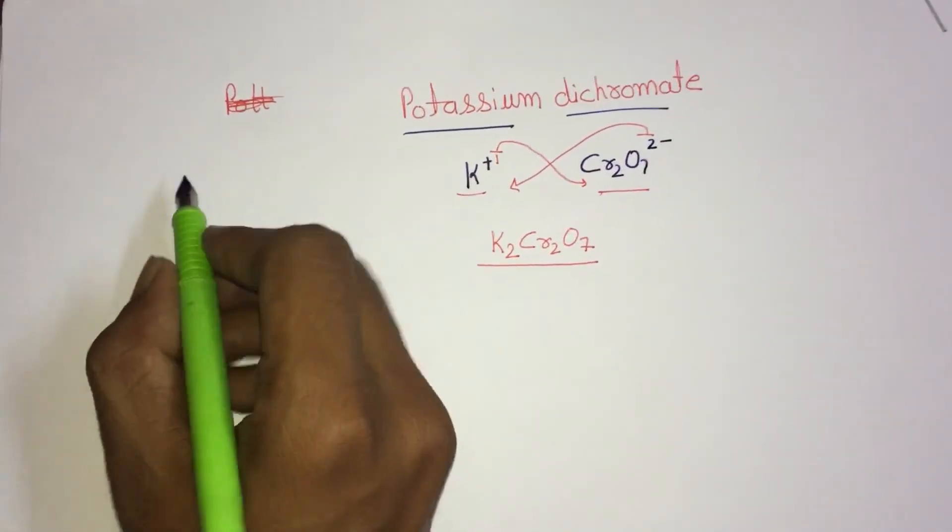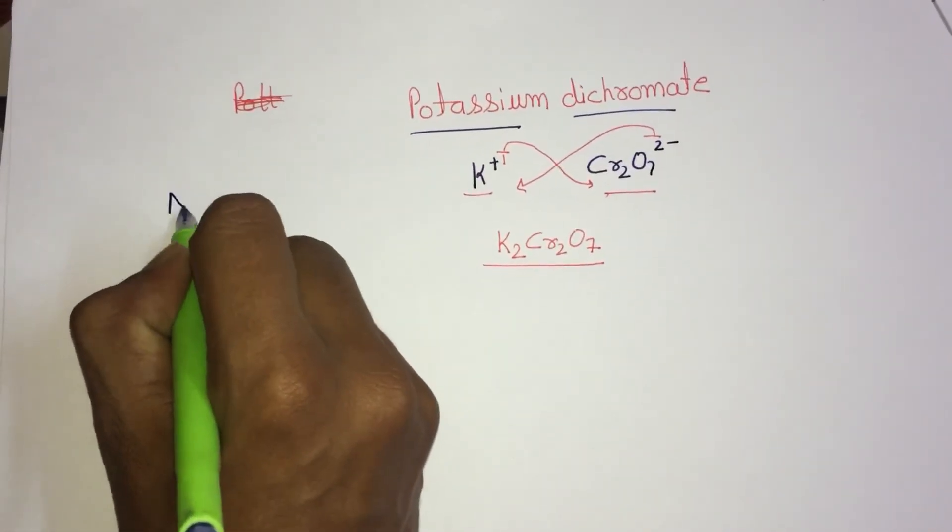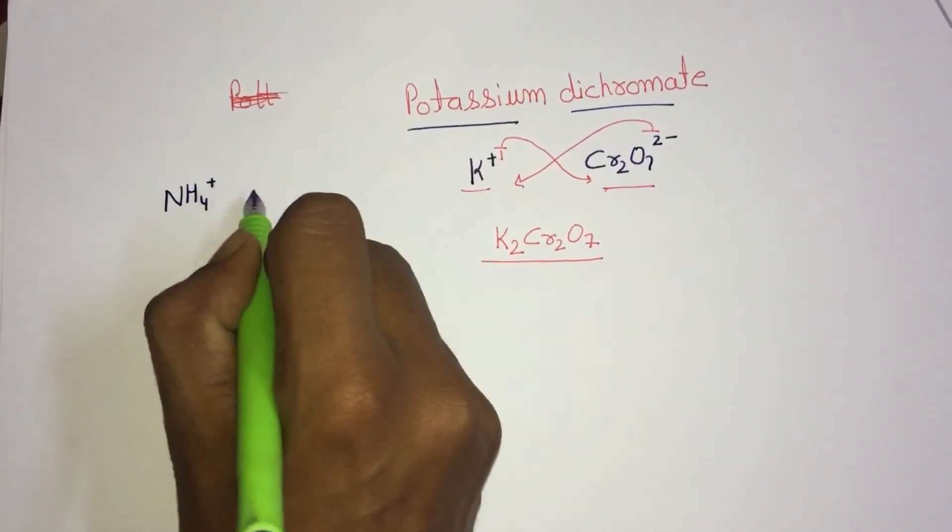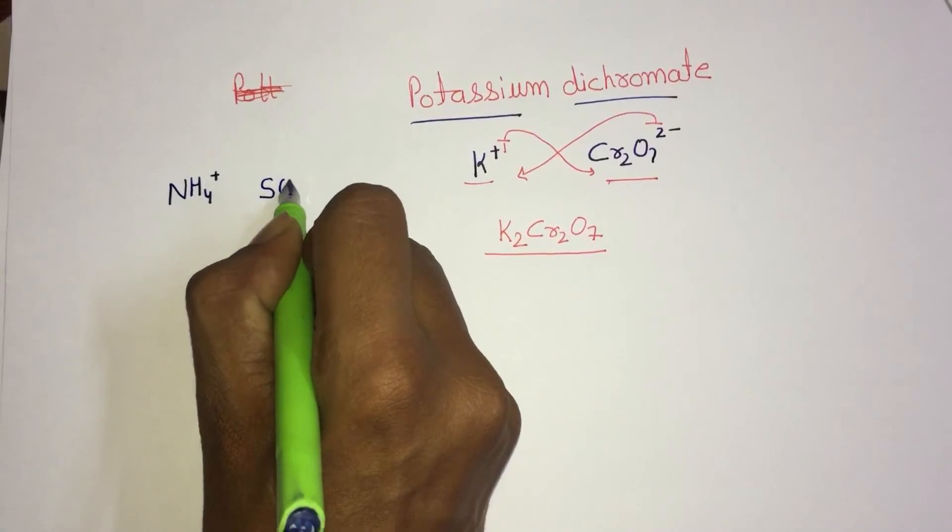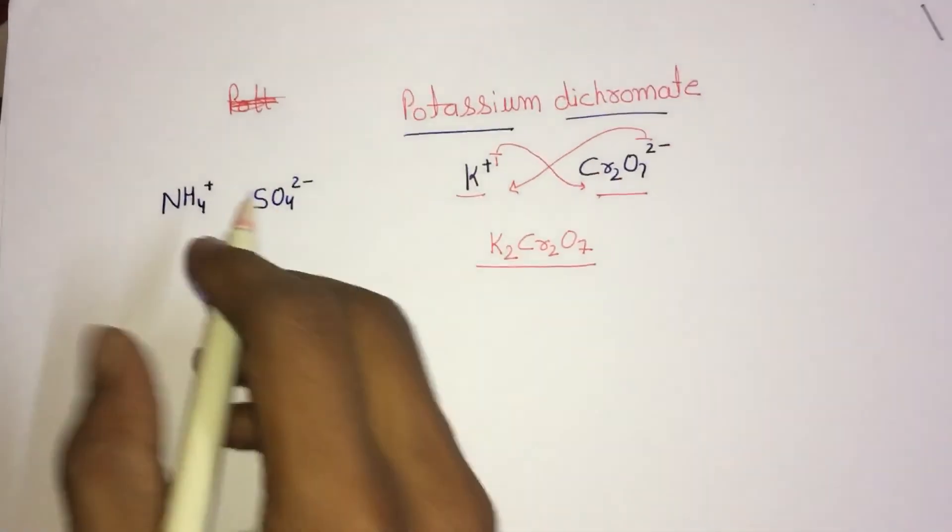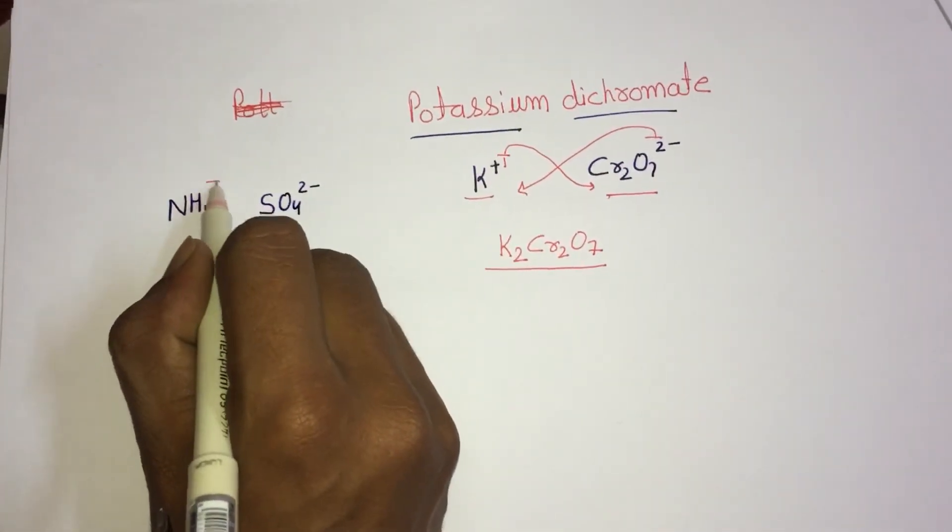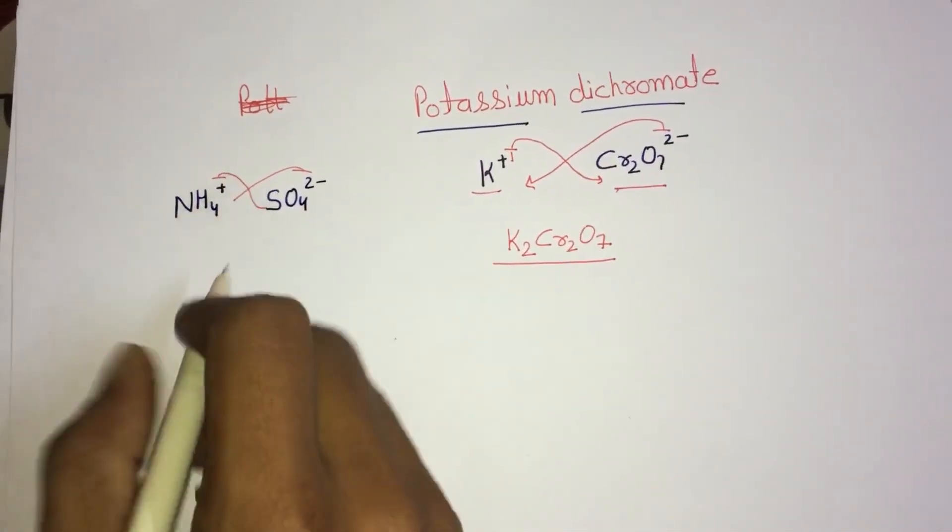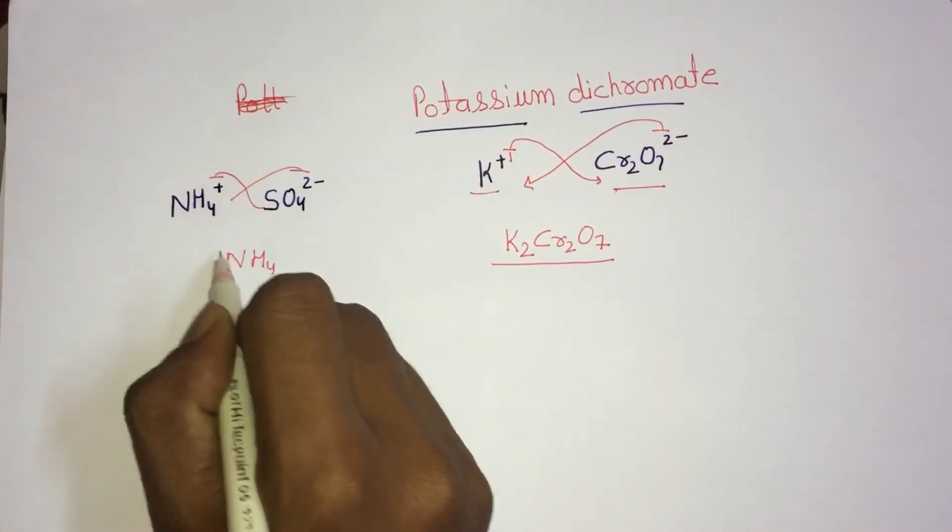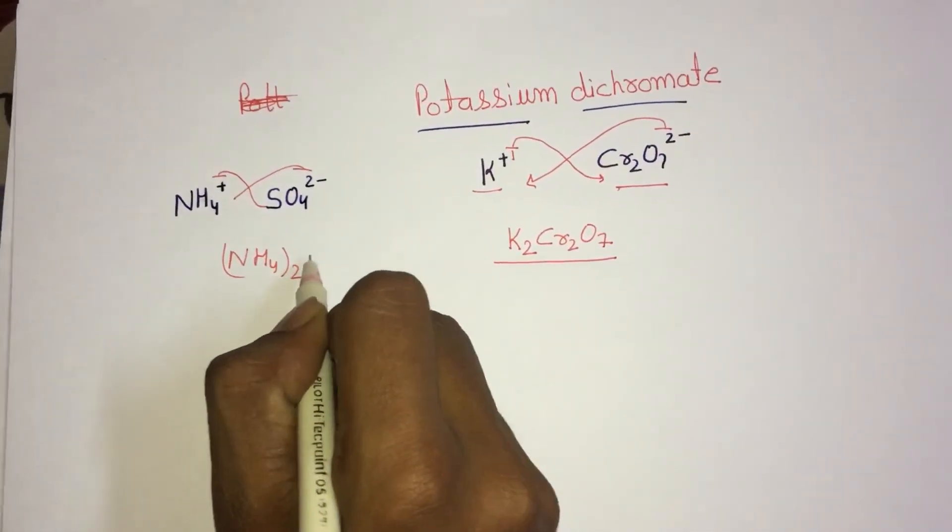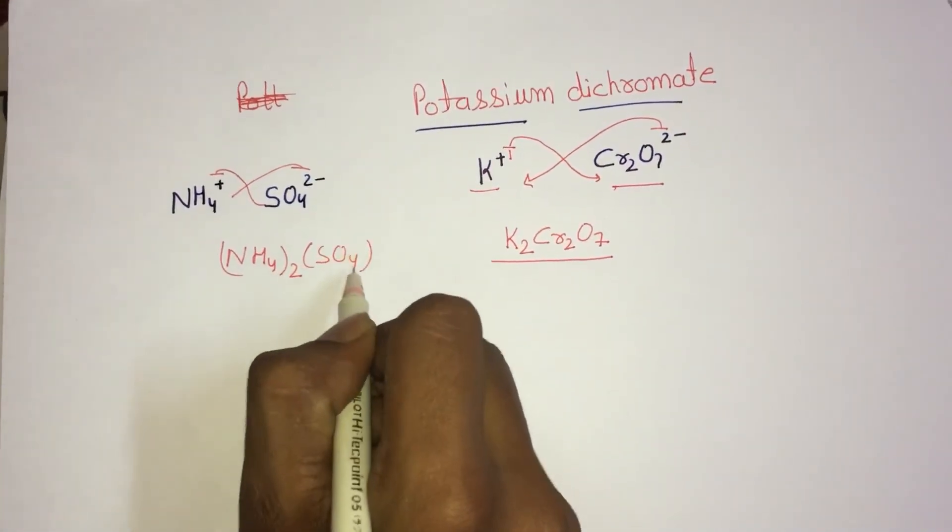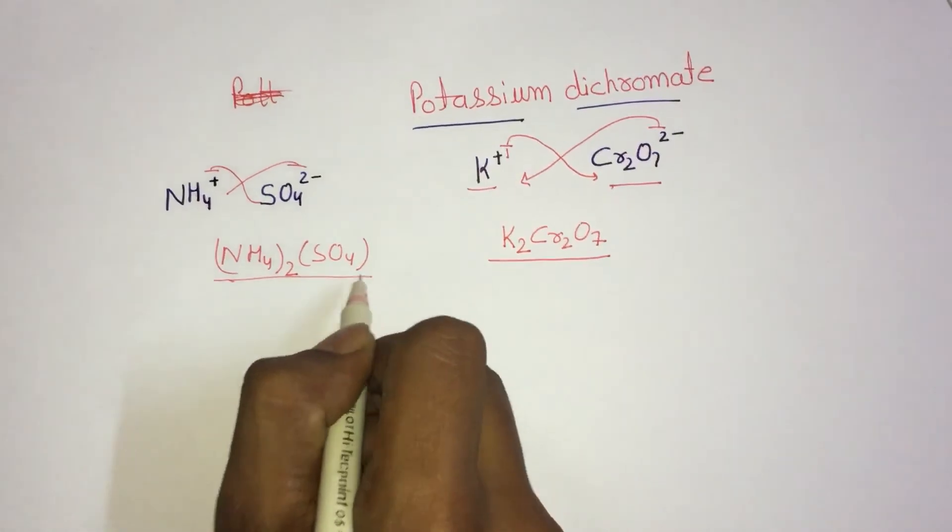For example, if I want to write ammonium sulfate, I must know that ammonium ion is NH4+ and sulfate is SO4 2-. Just exchange the valencies and it becomes (NH4)2SO4.